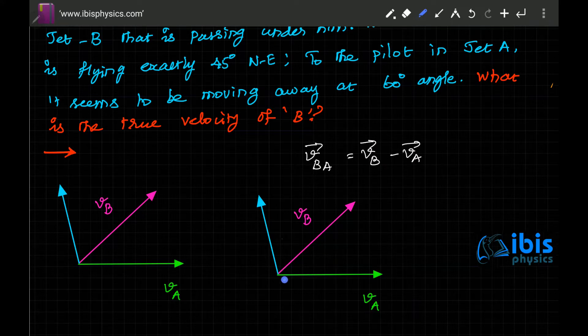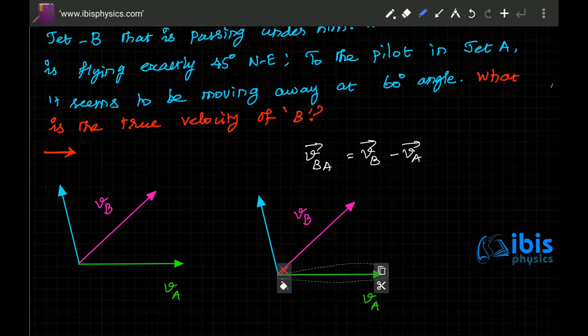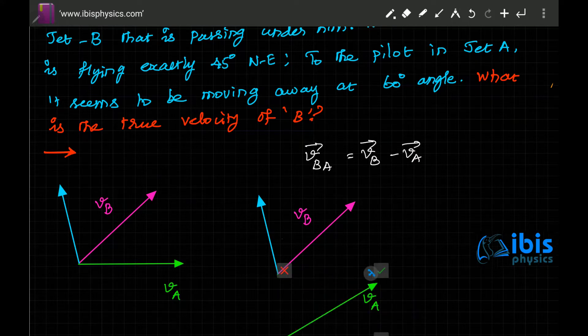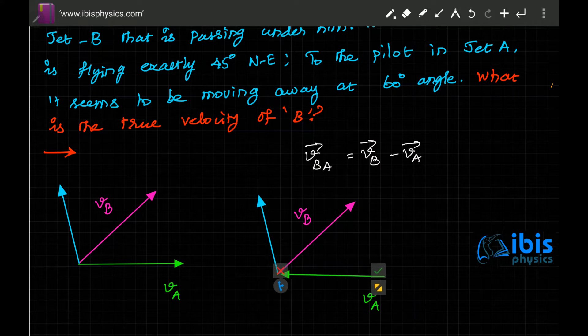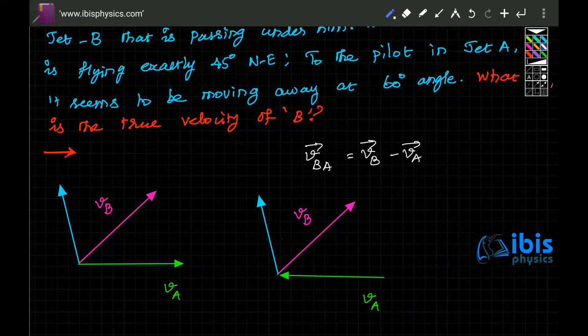We have to do VB minus VA. In order to make VA minus, we have to give it a 180 degree rotation. Now it is exactly opposite. This is minus VA because we have changed the direction.